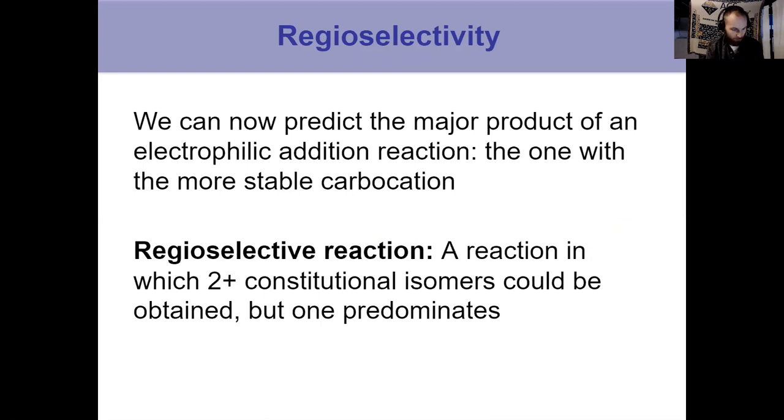So regioselectivity, what does this mean? A reaction is considered to be regioselective if it's possible in the reaction to make two or more constitutional isomers. Remember from Chapter 4, that means they're actually bonded differently, bonded, broken, and moved around. Two or more constitutional isomers, but one of them is predominating. Either it's the only one that's made, 100-0, or even 75-25. It's still considered to be a regioselective reaction.